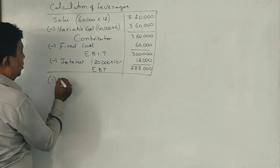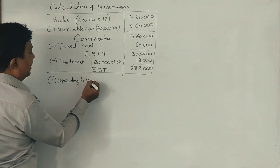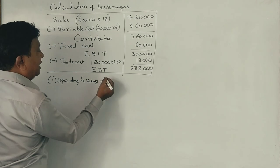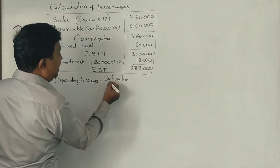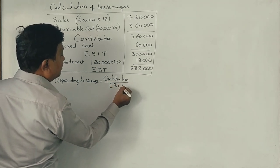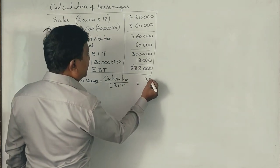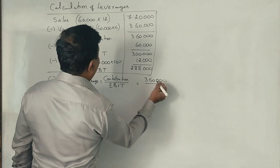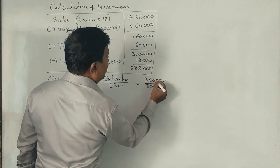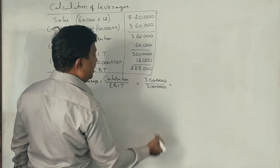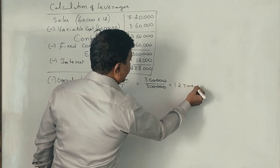Now, let us calculate operating leverage. What is the formula for operating leverage? Contribution divided by EBIT. What is the amount of contribution? Contribution is 3,60,000 rupees. And EBIT is 3,00,000 rupees. If you strike off four zeros, then how much you get? 1.2 times.